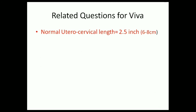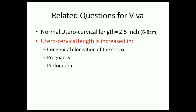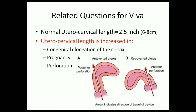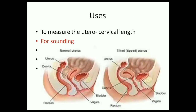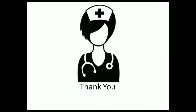The next question: what are the conditions under which uterocervical length is increased? It is increased in congenital elongation of cervix, during pregnancy, and in case of perforation. What are the conditions in which the uterocervical length is shortened? It is shortened in case of amputation of cervix and post hysterectomy. The normal position of the uterus is anteversion.